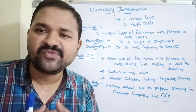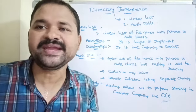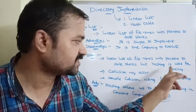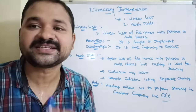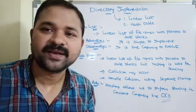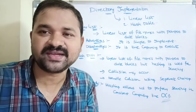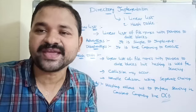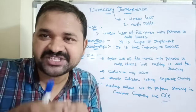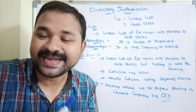In the hash table approach, we also maintain a linear list of files and those files point to the corresponding data blocks, but we use hashing technique instead of linear search. Every file has some identifier. Whenever we create a file, an identifier is created for that file, and hashing is applied on it. Hashing produces a hash value, and that value is mapped to an entry in the hash table.